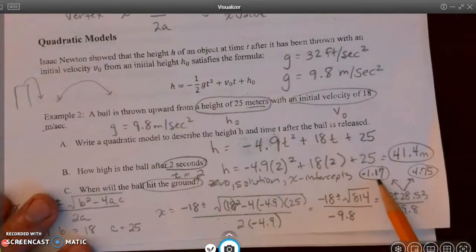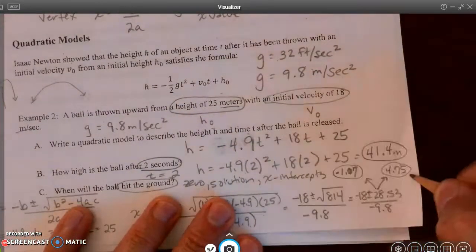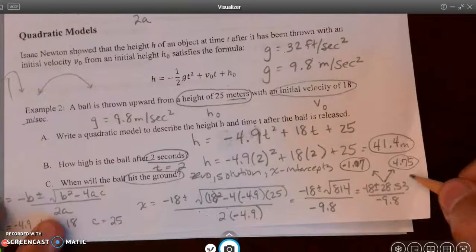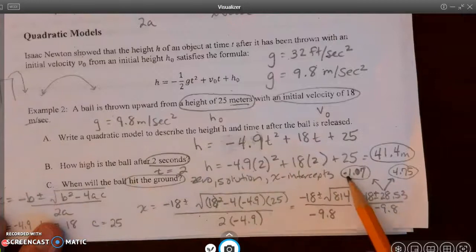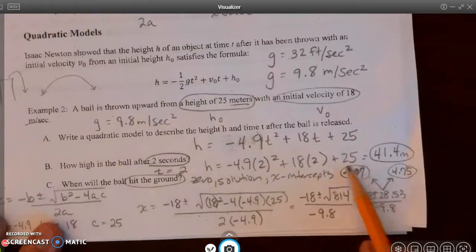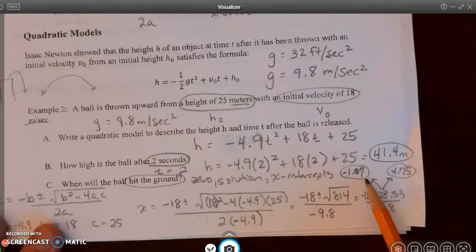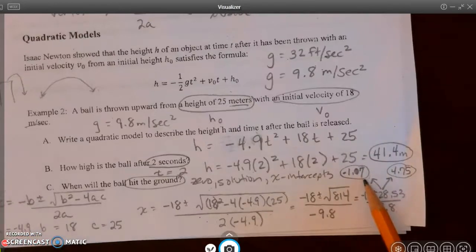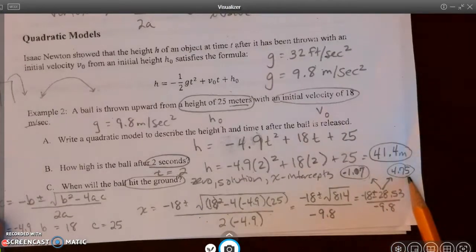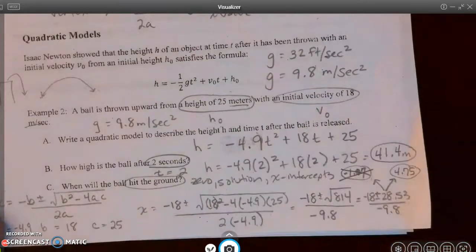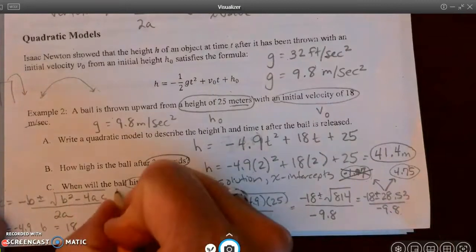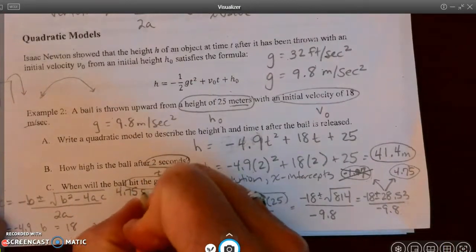All right, so you'll notice I put in the negative 1.07 and the 4.75. Now, in light of this problem, since it says when will the ball hit the ground, this negative 1.07 doesn't make sense. Saying negative seconds, like a second before they ever threw it, it would have hit the ground, that doesn't make sense. But the 4.75 does make sense. So I'm just going to cross out this solution. I don't need that one. And my only answer is 4.75 seconds.